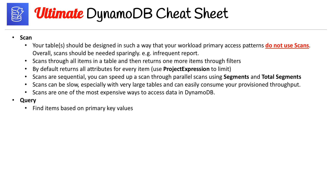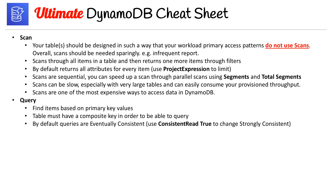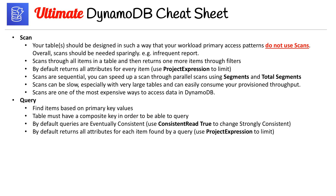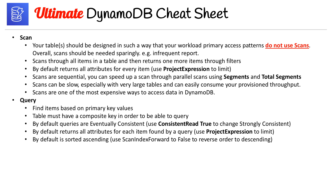Scans are one of the most expensive ways to access data in DynamoDB. Queries find items based on primary key values. Tables must have a composite key in order to query. By default, queries are eventually consistent, but you can set the ConsistentRead attribute to true for strongly consistent reads. By default, queries return all attributes for each item found — you can use ProjectExpression to filter. By default results are sorted ascending; you can use ScanIndexForward set to false to reverse to descending order.